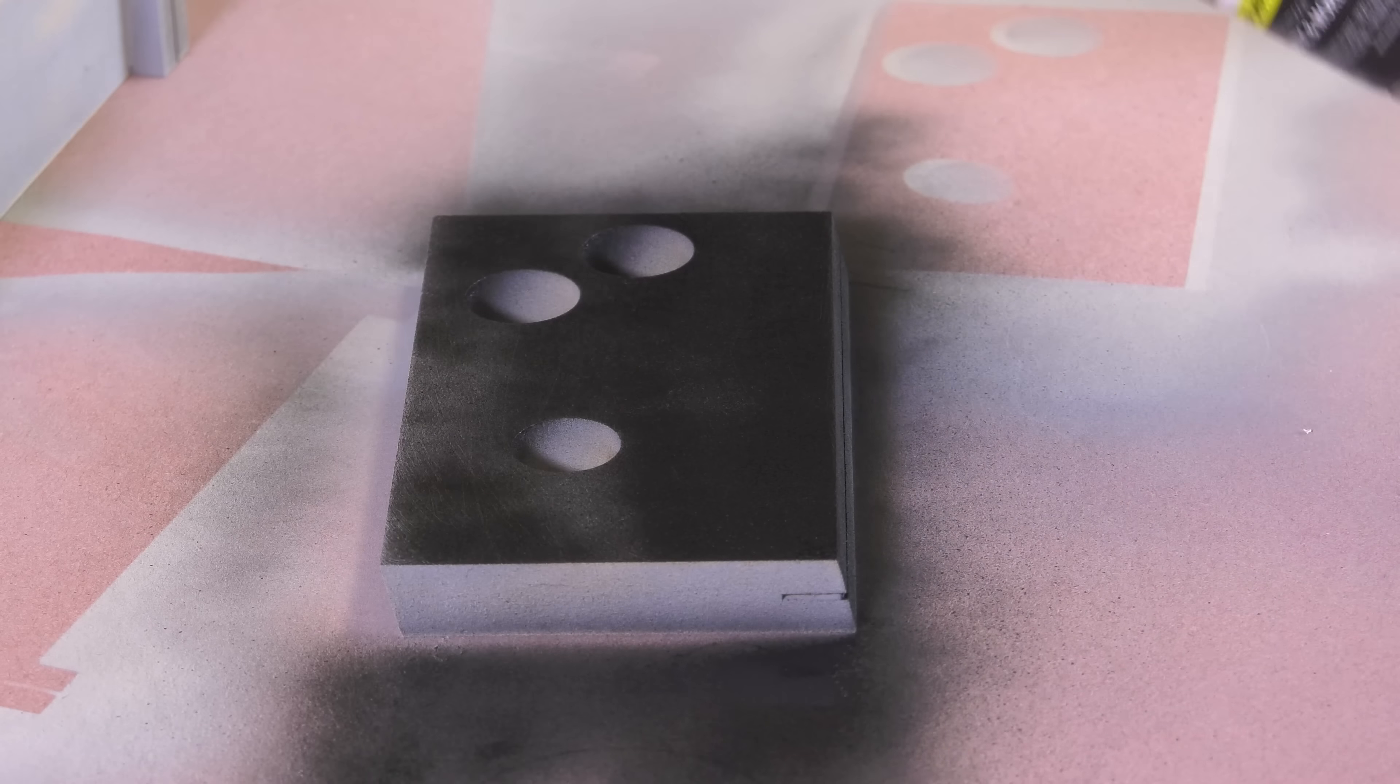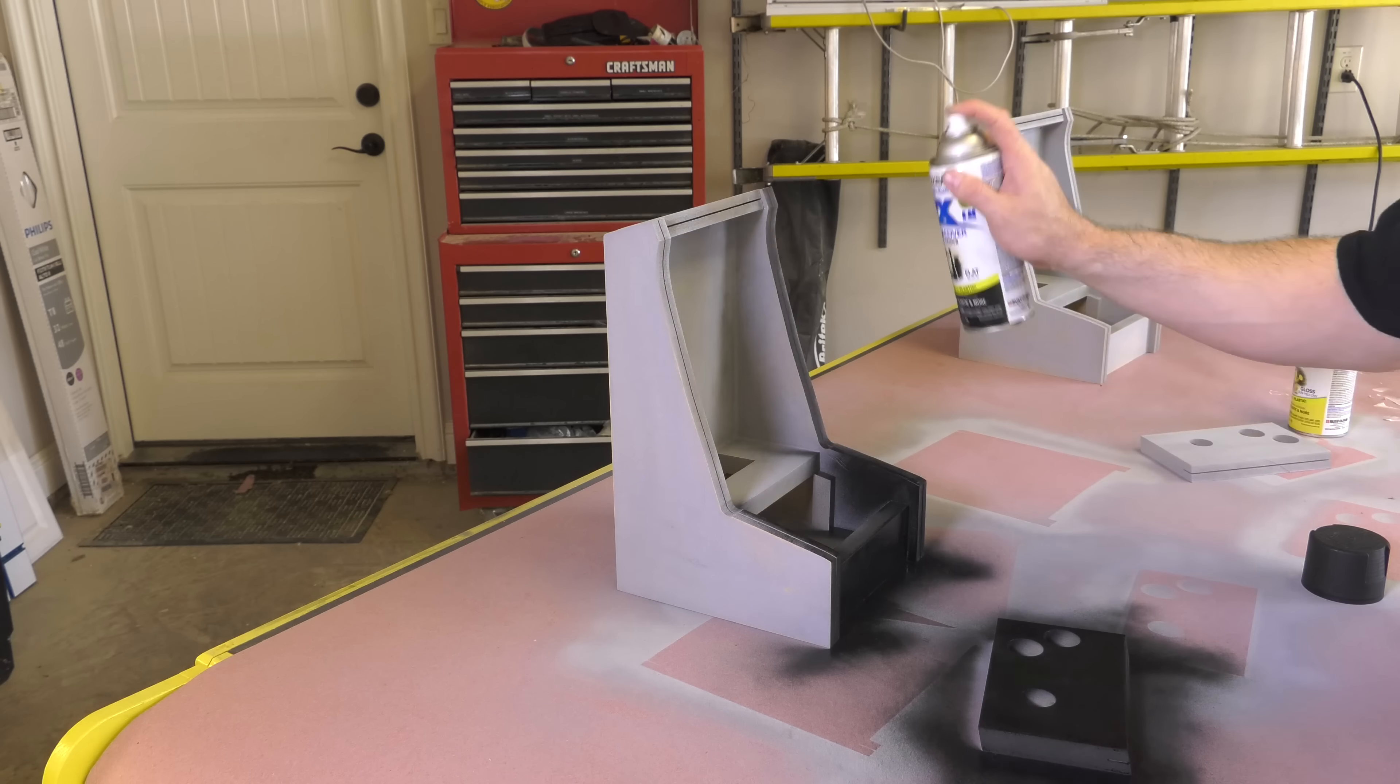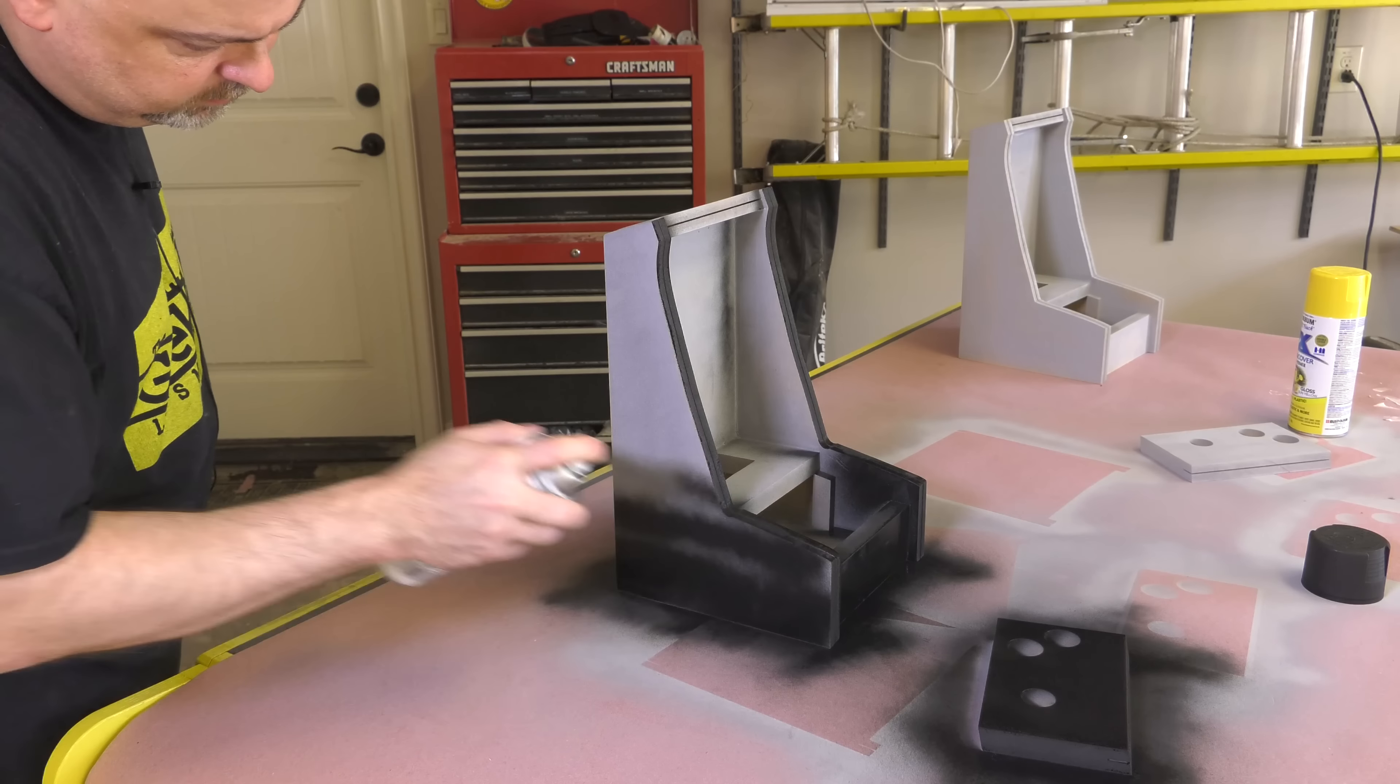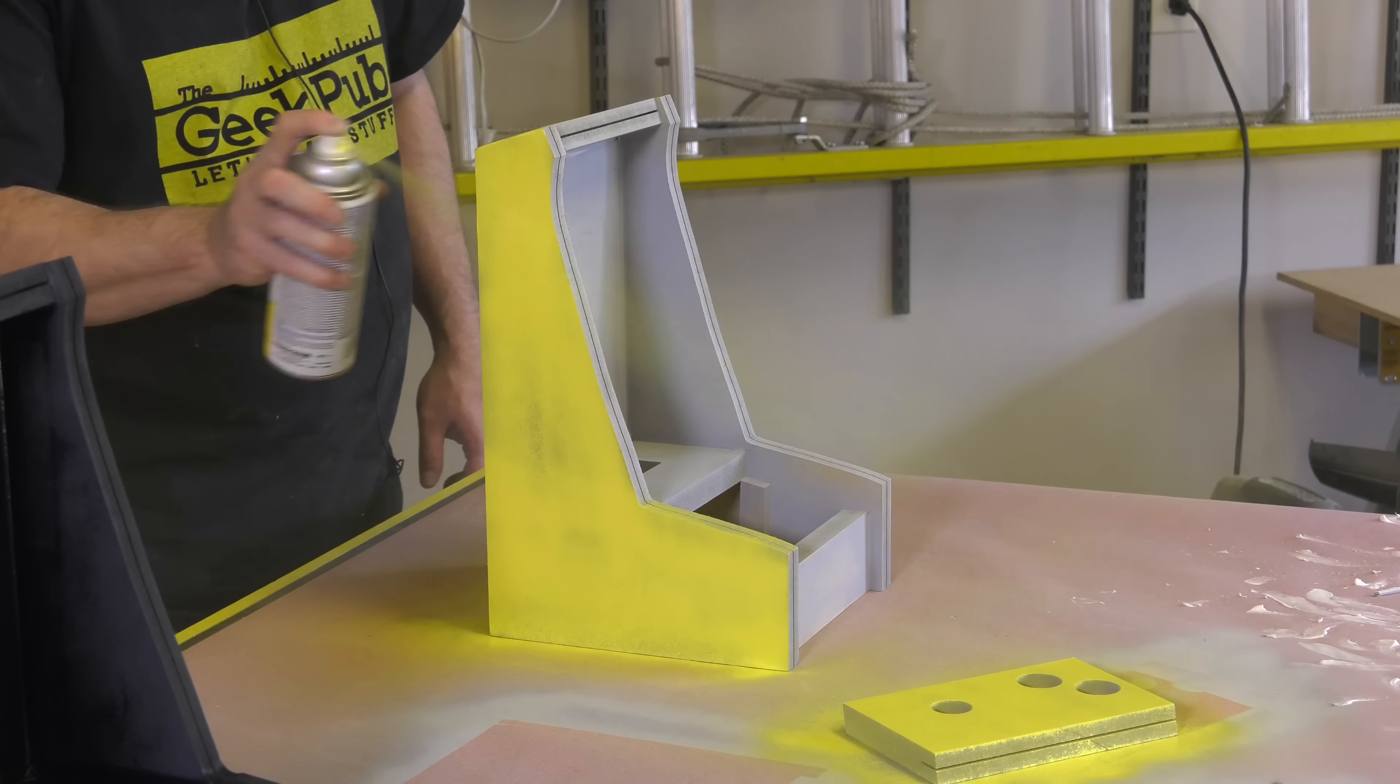When painting MDF, I generally use three coats of paint about seven or eight minutes apart from each other. This seems to work really well. I do not sand between coats or do any other prep work except for a light sanding of the filler primer before the first coat of paint.